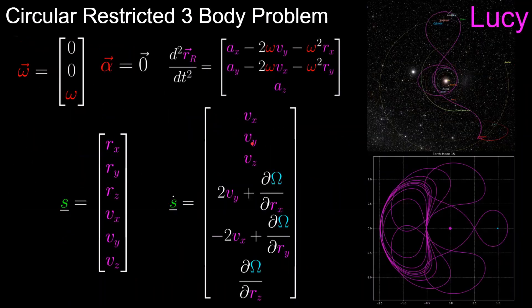In the next video, we will apply the second derivative equation to the circular restricted three-body problem, where we set up the rotating reference frame such that its angular velocity is only in the z-direction, with no angular acceleration. This reduces the second derivative equation to a simpler vector form. Then we apply that with the acceleration due to gravity equations and a pseudo-potential function — capital omega — to get our second-order differential equations from which we can propagate trajectories.